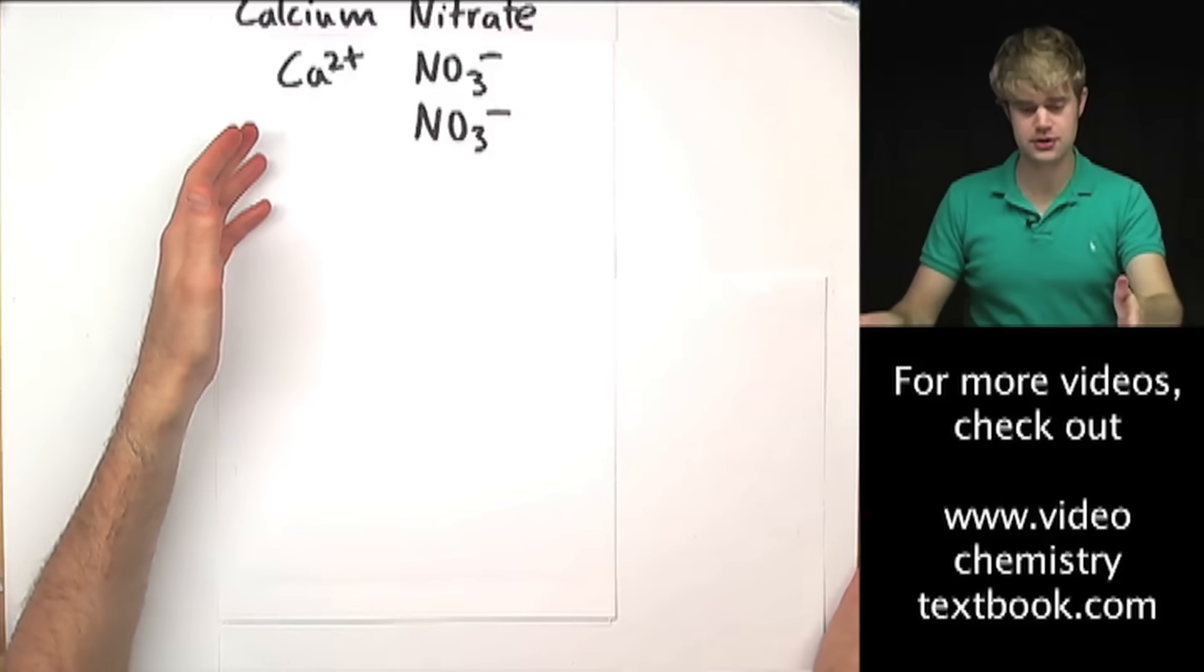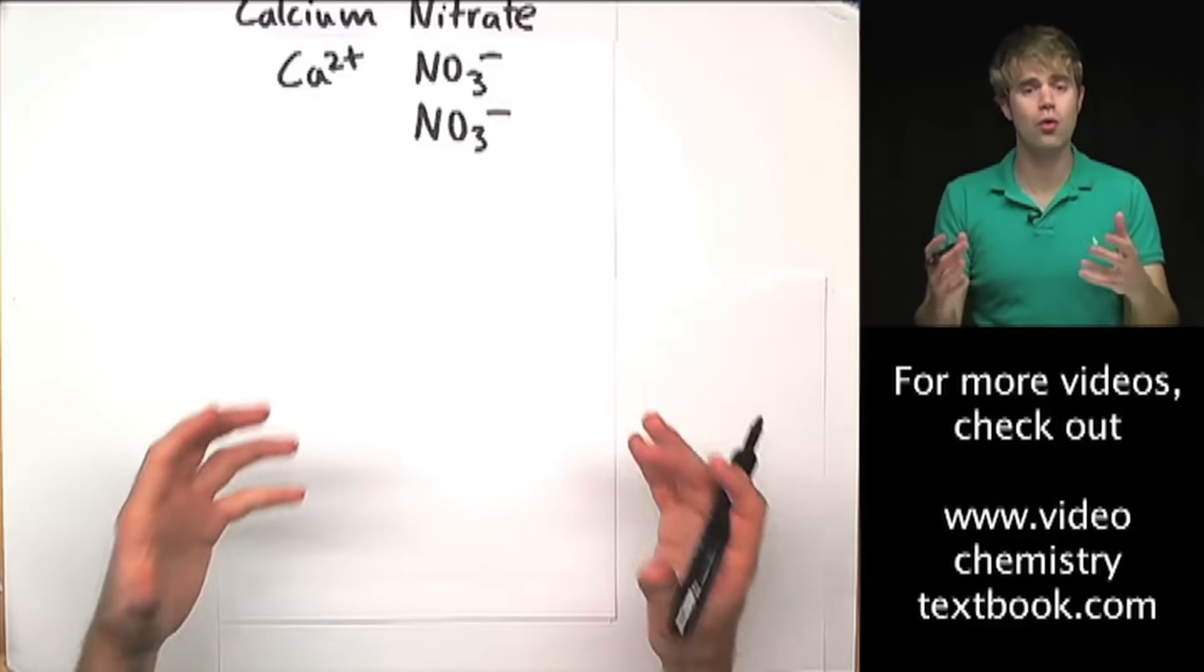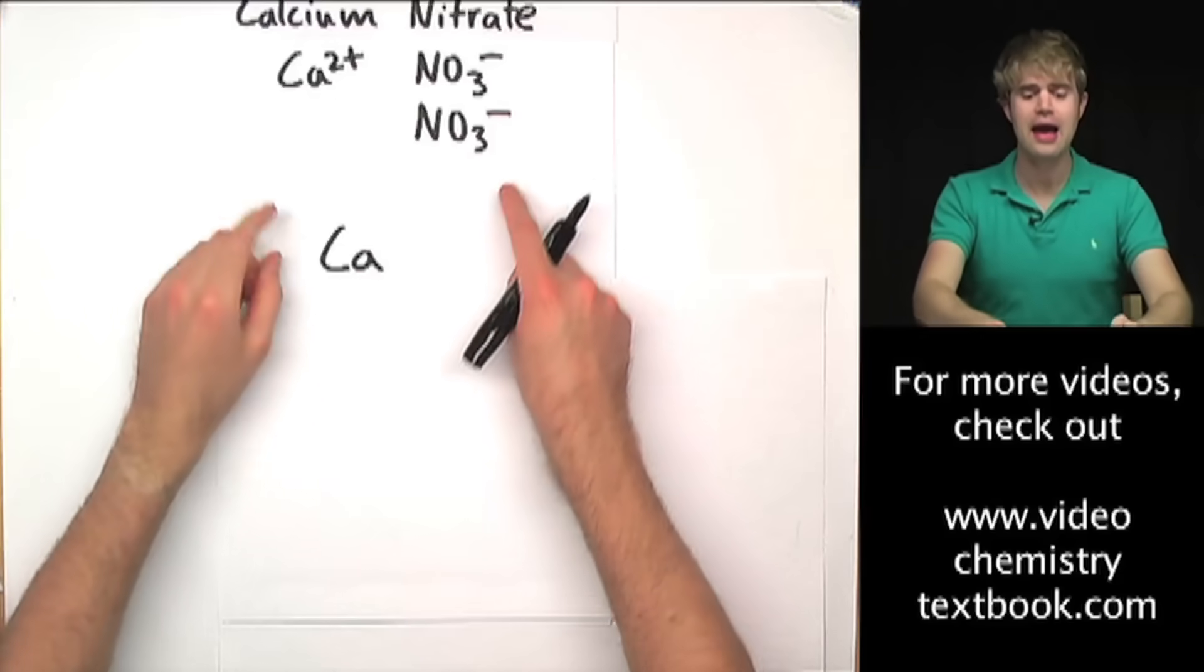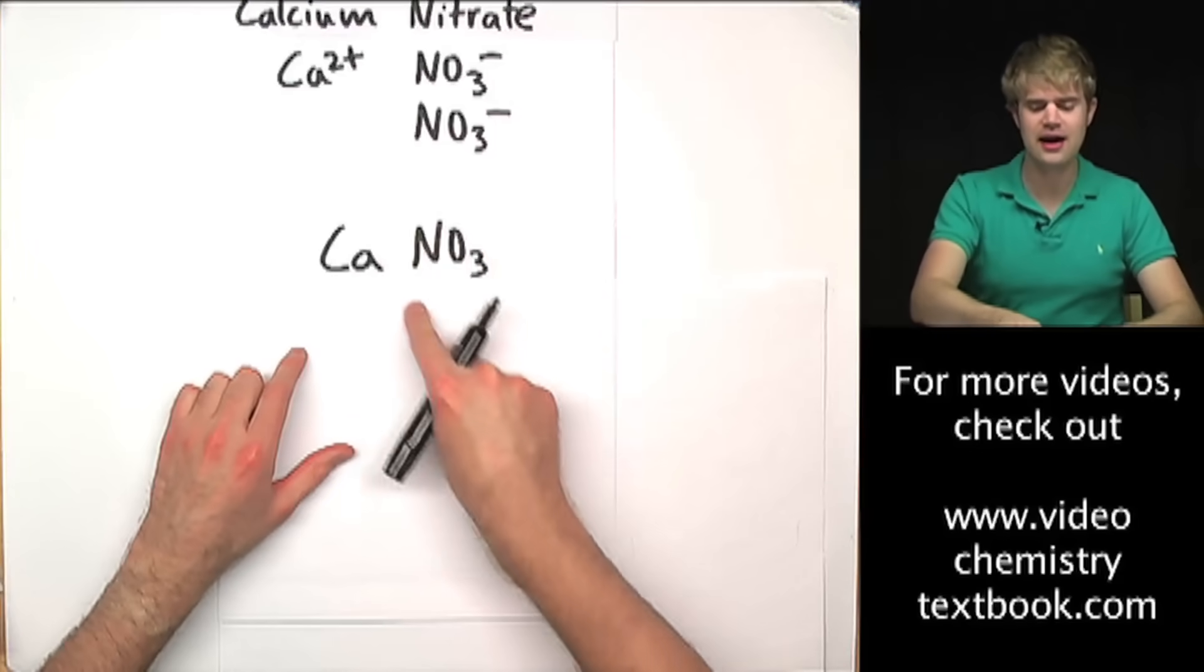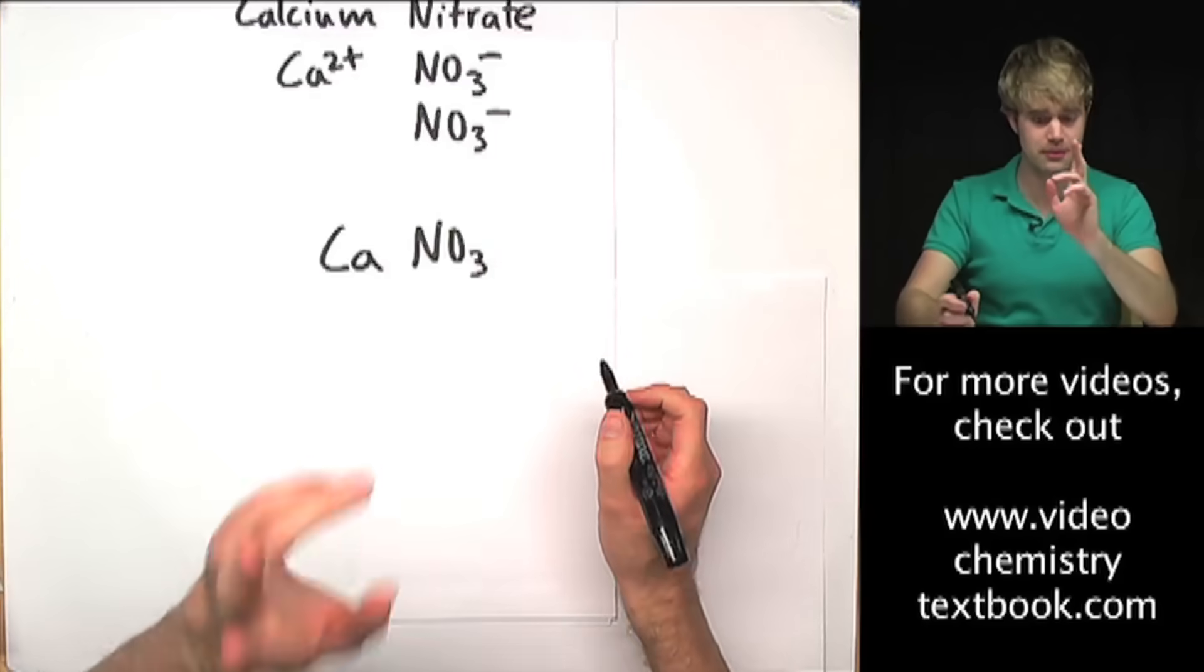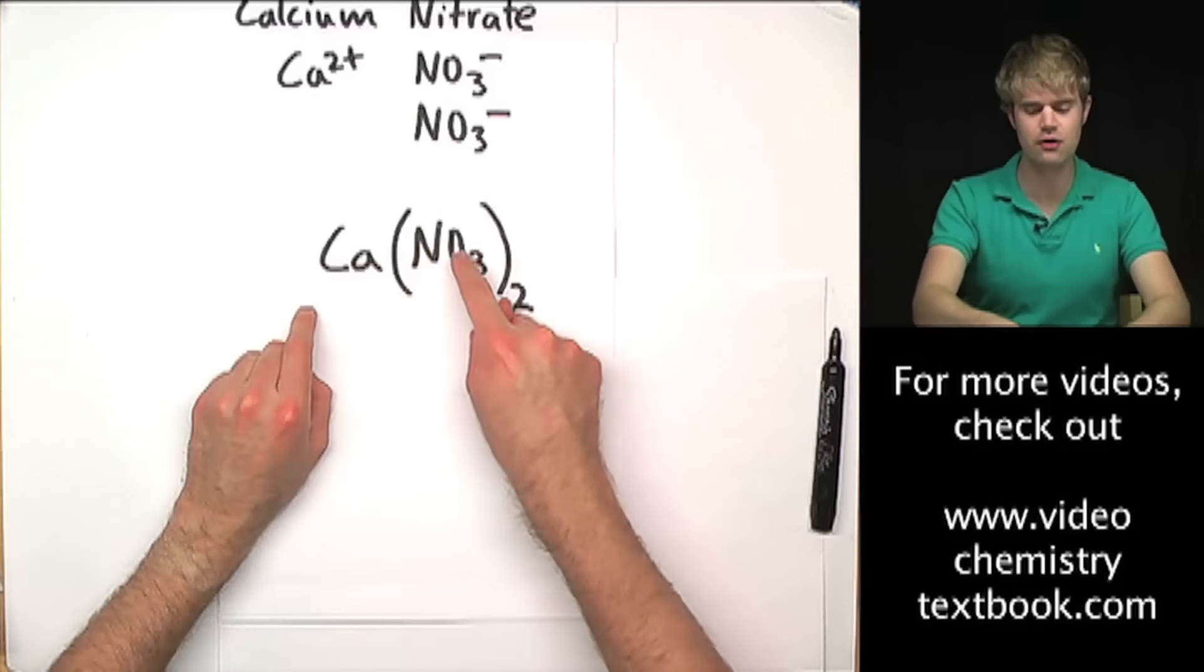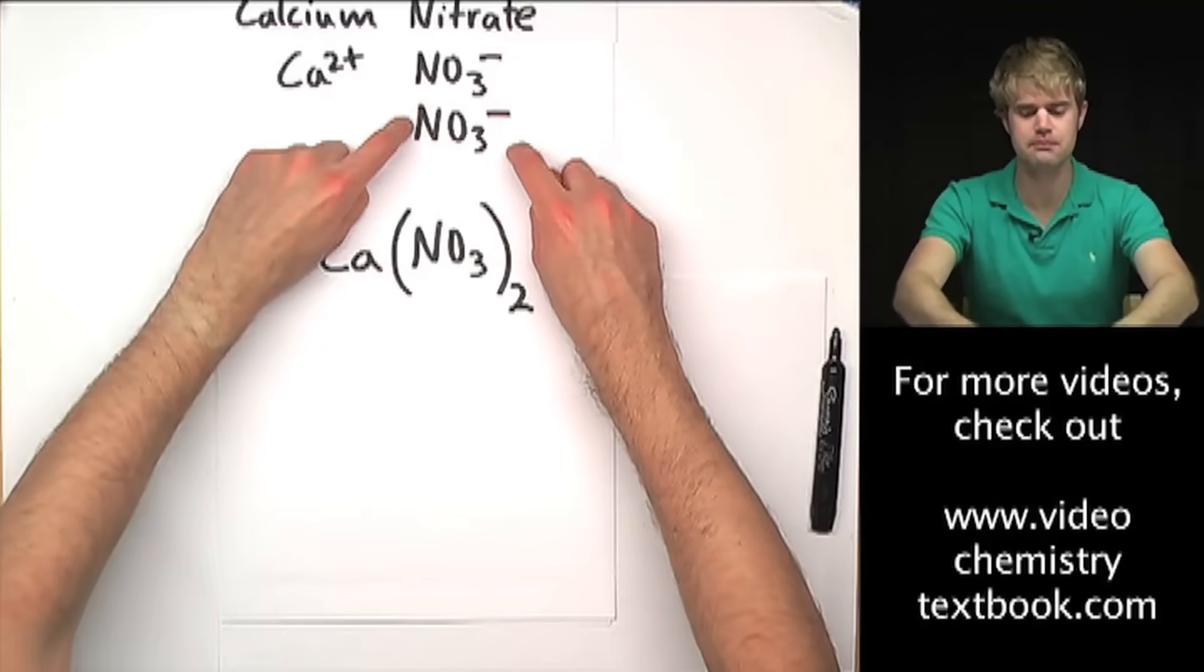Now I have the charges balanced and I want to write the chemical formula showing how many of each I need. I need 1 calcium, so I write Ca without anything after it. Then I want to say I have 2 nitrates. So NO3, there's my nitrate, but I want 2 of this whole thing. So I'm going to use parentheses. I surround the polyatomic ion with parentheses and put down here how many I want. So it's Ca(NO3)2, meaning 1 atom of calcium and 2 whole clumps of nitrate.